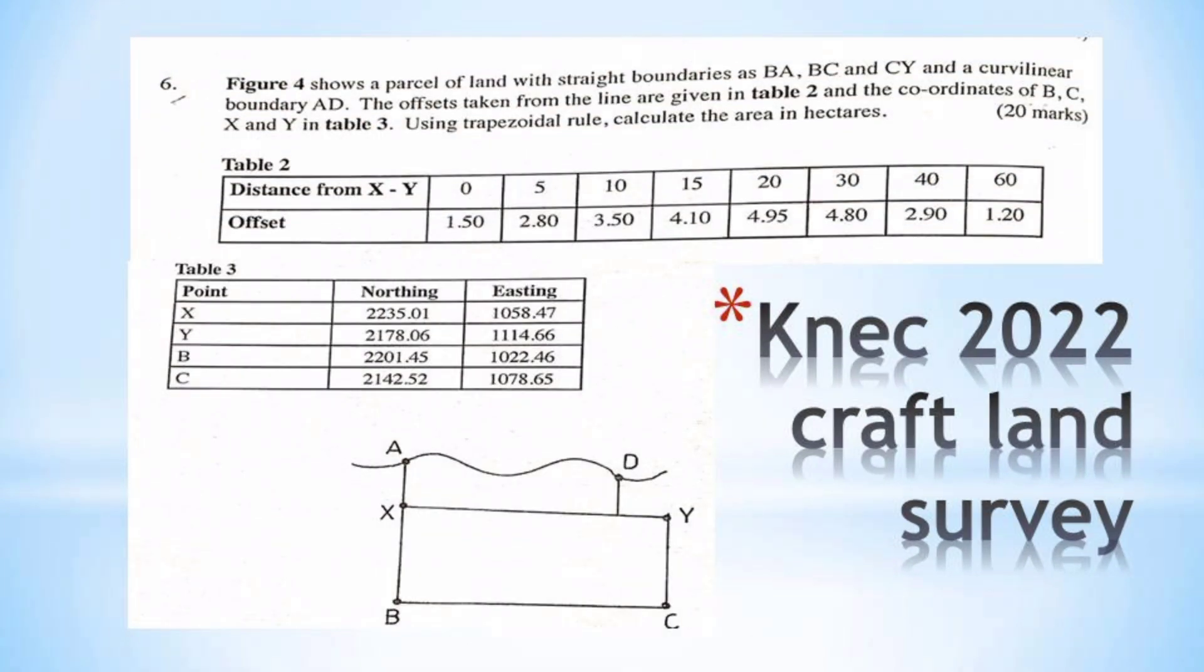Question number six: Figure below shows a parcel of land with straight boundaries BA, BC, and CY, and a curvilinear boundary AD. The offsets taken from the lines are given in Table 2, and the coordinates of B, C, X, and Y are in Table 3.